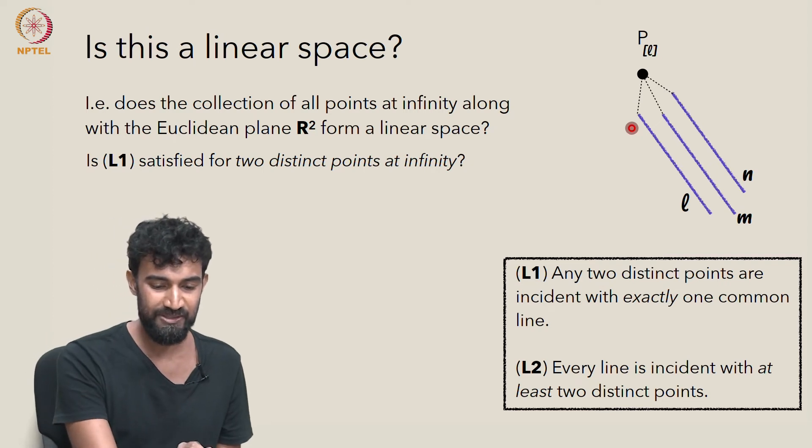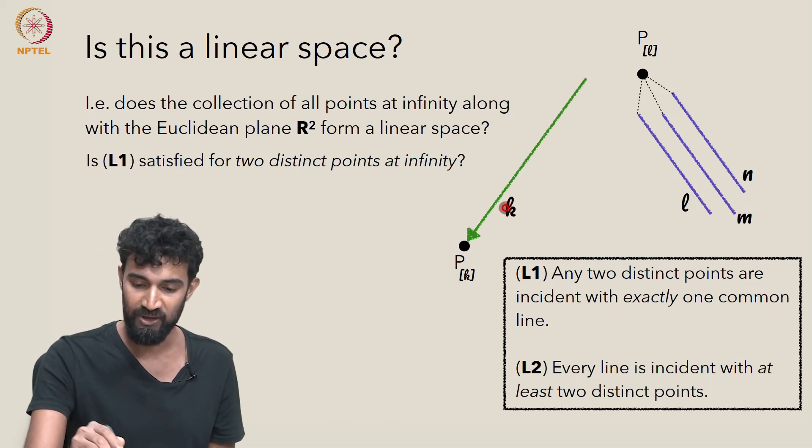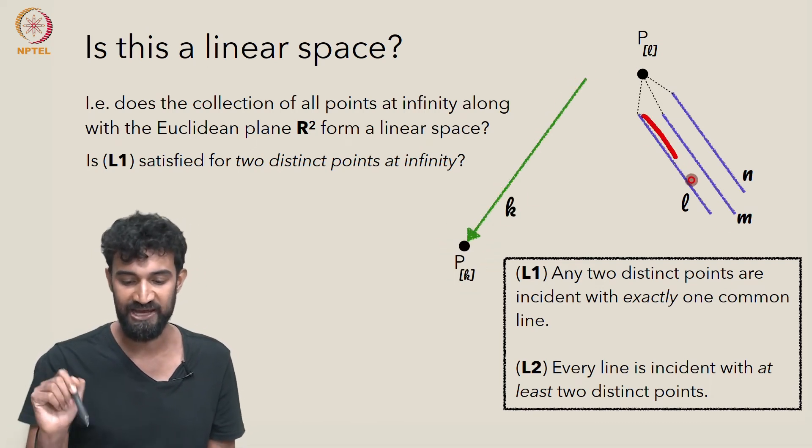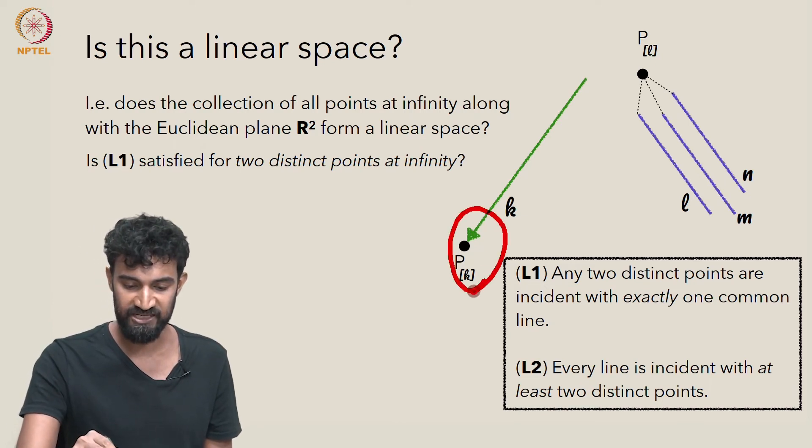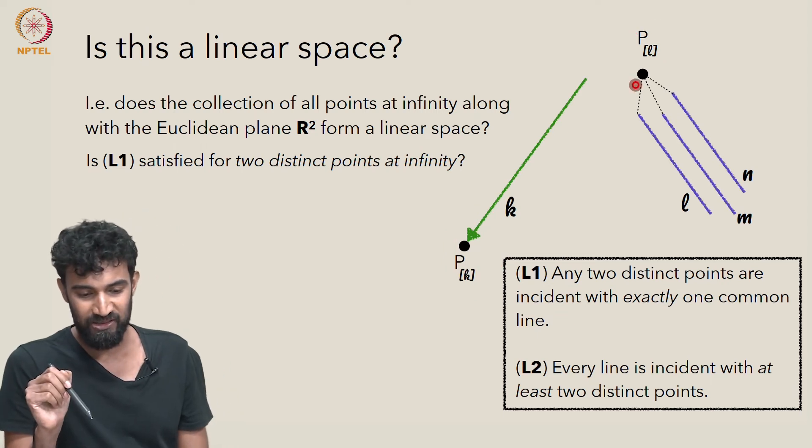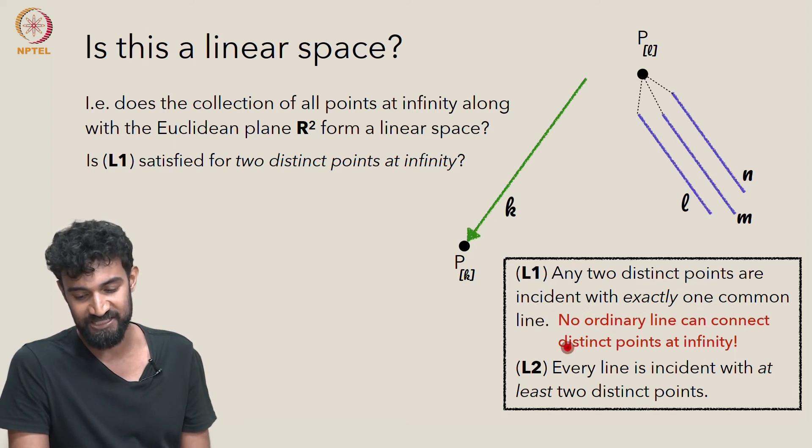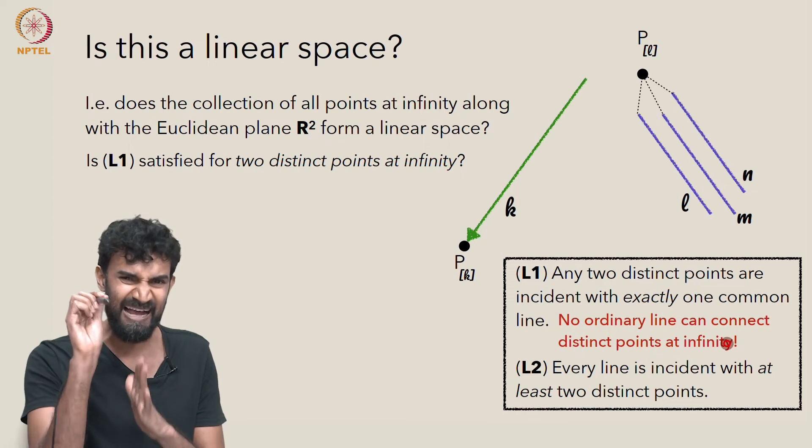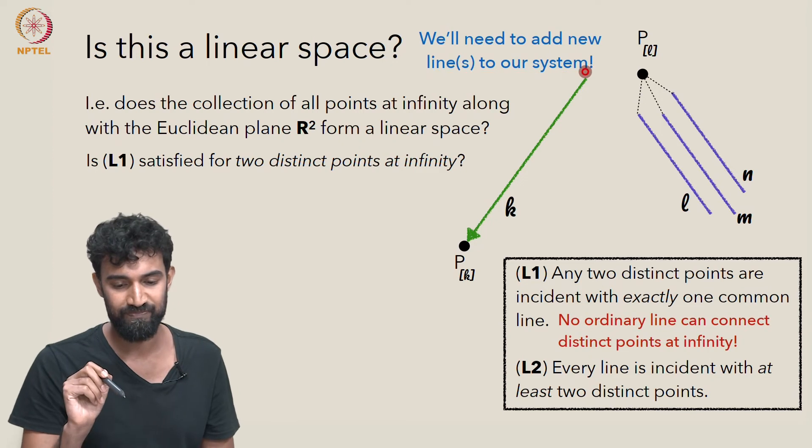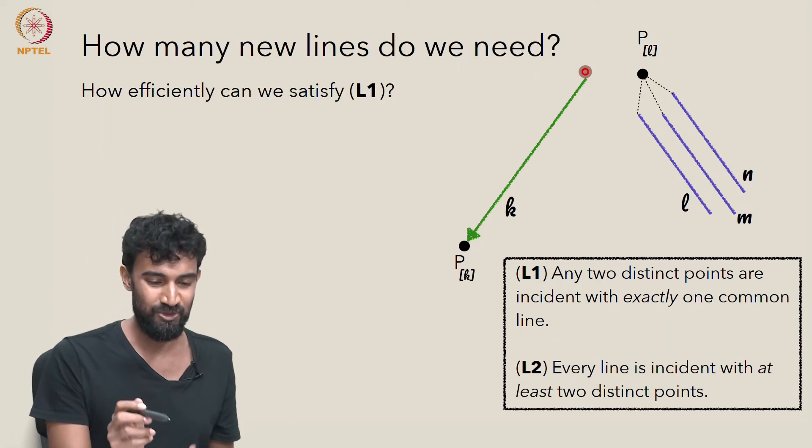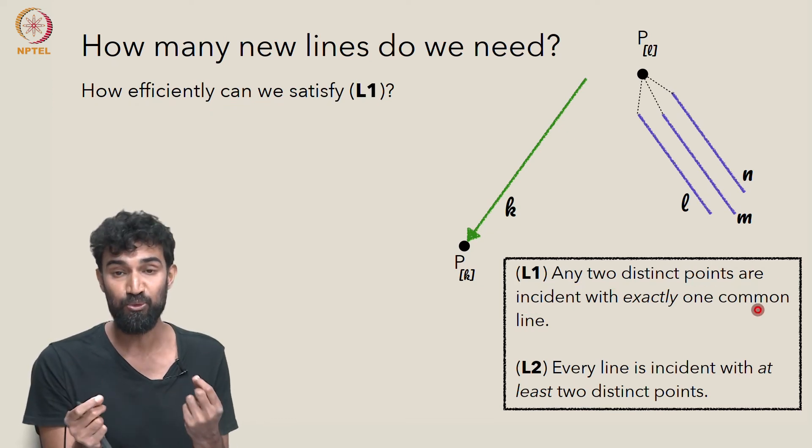What about for two distinct points at infinity? Say we take PL and PK for some other line K which is not parallel to L. In this case, is there a unique line connecting PK and PL? Well, we have a problem here because no ordinary line can connect distinct points at infinity. Every ordinary line hits exactly one point at infinity. So we're going to have to add new lines to our system. We don't want to add too many new ones, so let's see how efficiently we can do this in order to satisfy this axiom.